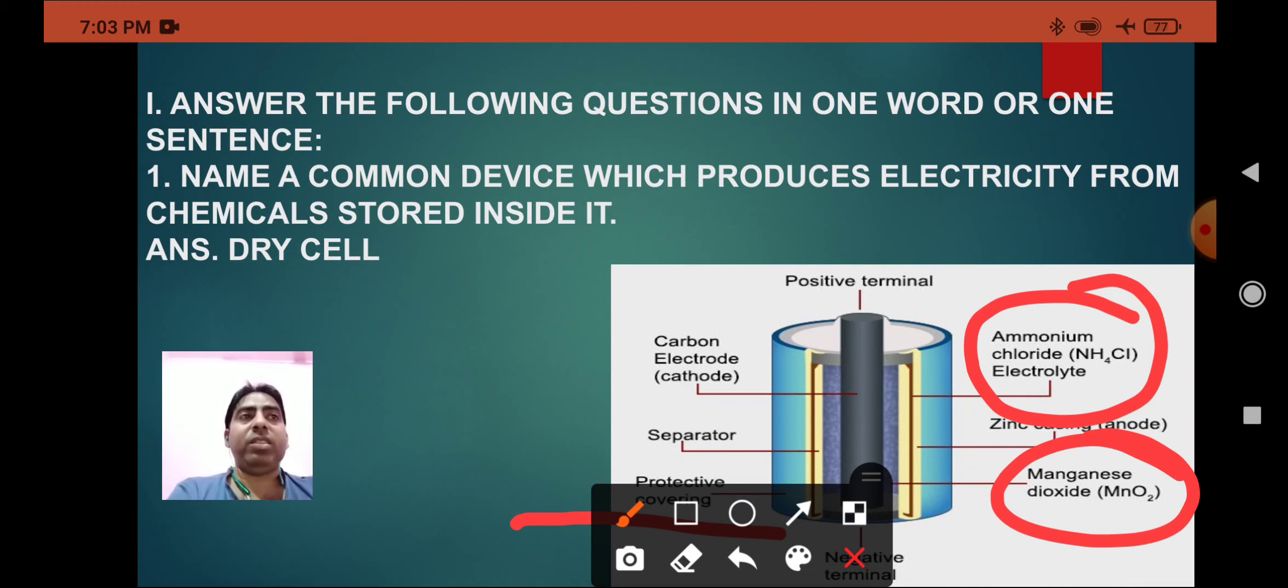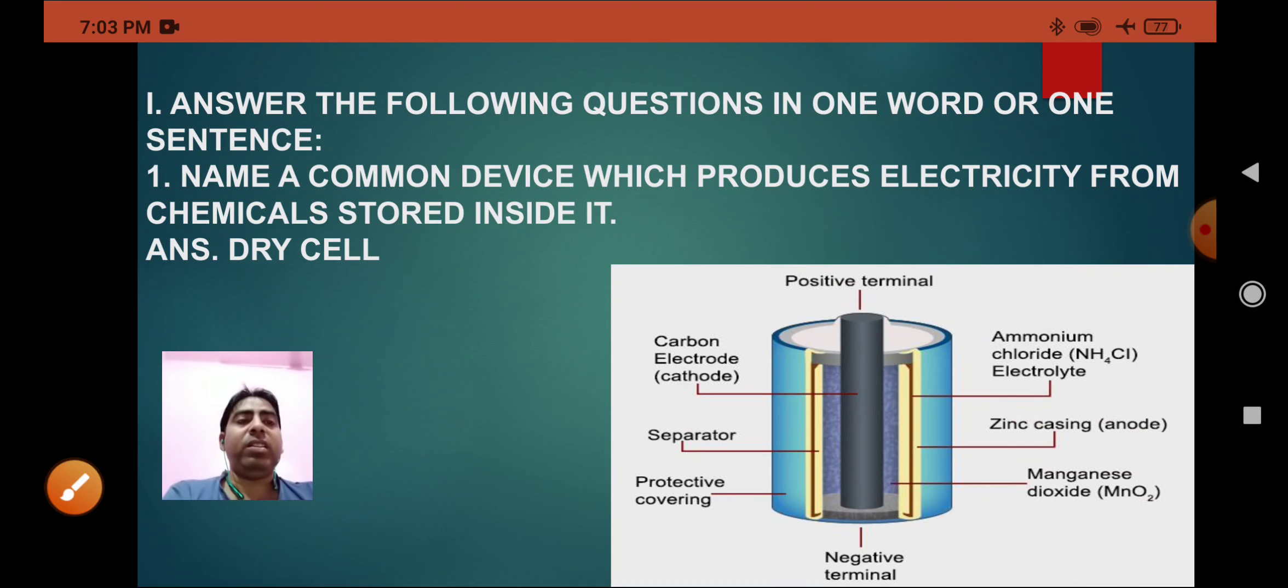The tip of the cell, that is metallic cap, acts as a positive terminal and the base of the zinc container acts as a negative terminal. Here you can see this is the positive and this is negative terminal.